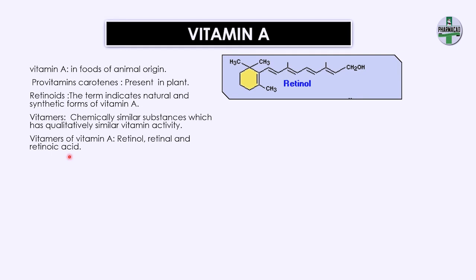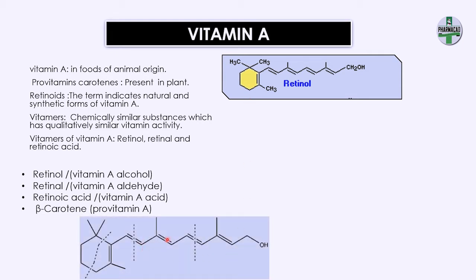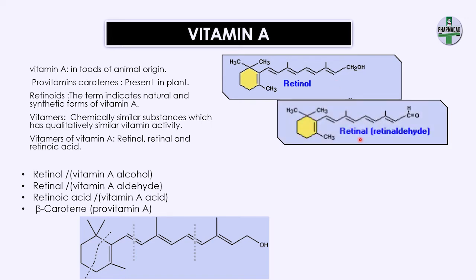The first vitamer is retinol. The suffix '-ol' means it has an alcohol group, so it is also called vitamin A alcohol. There is a ring called the beta ionone ring, and it has two isoprenoid units. There are four double bonds in retinol. In animals, retinol is stored in tissues in the form of retinyl esters along with long chain fatty acids.